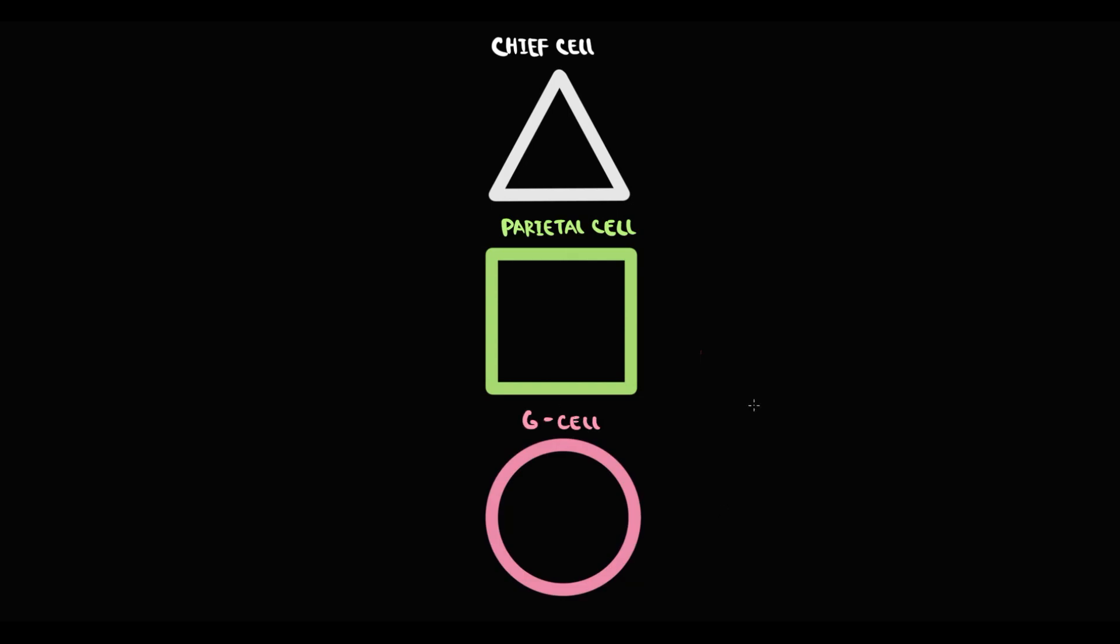Parietal cells have a specific transporter called hydrogen potassium ATPase. By hydrogen potassium ATPase, parietal cells produce hydrochloric acid.